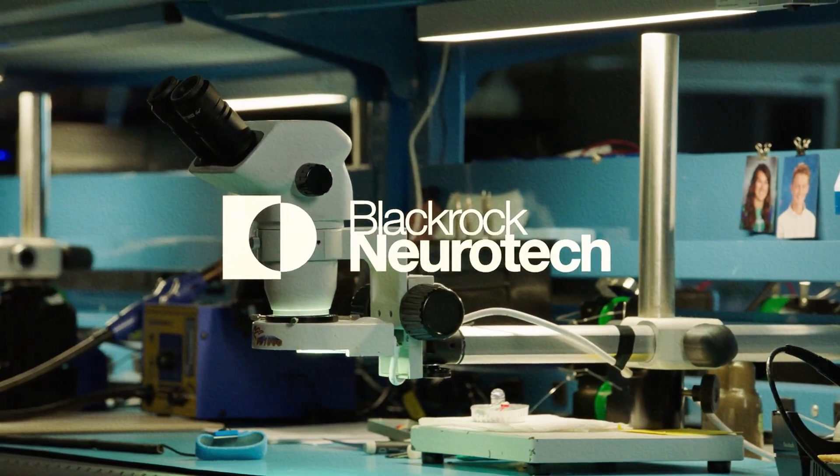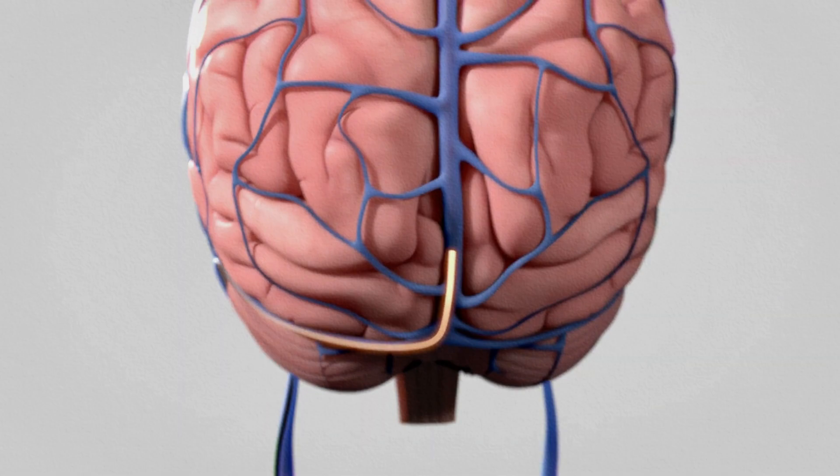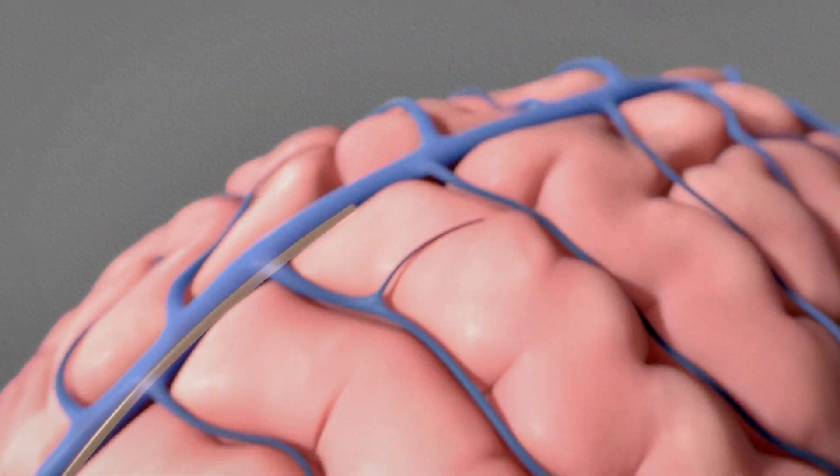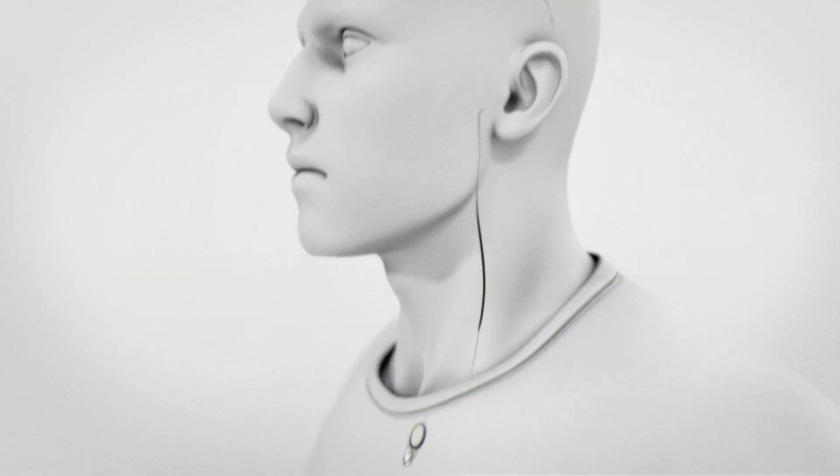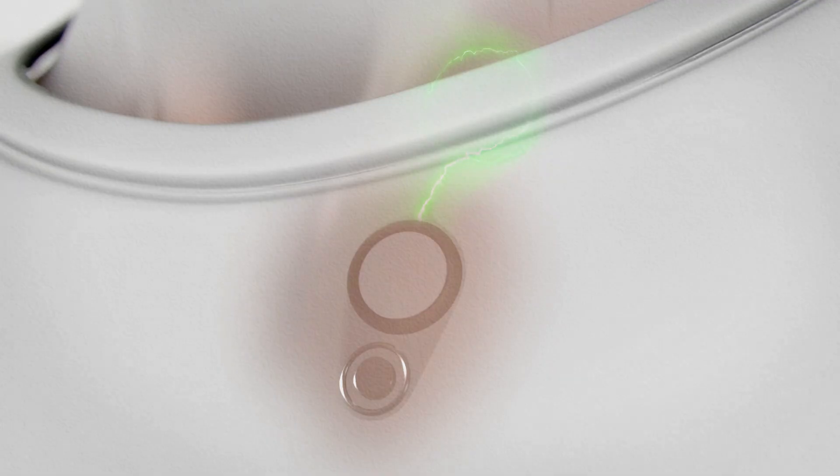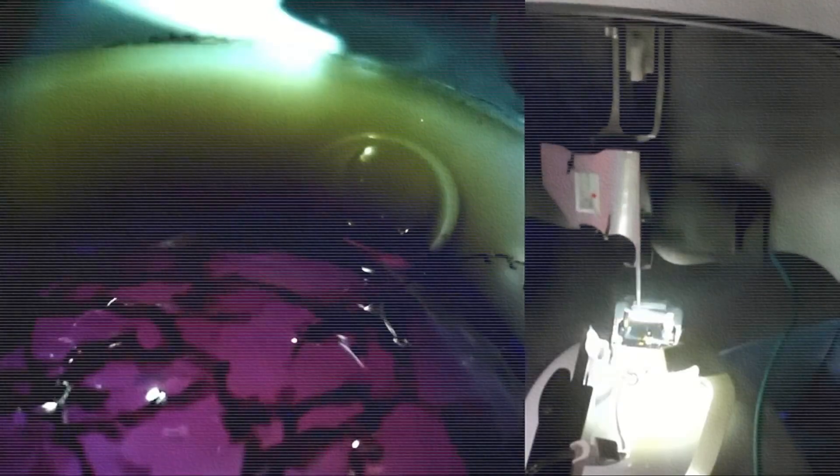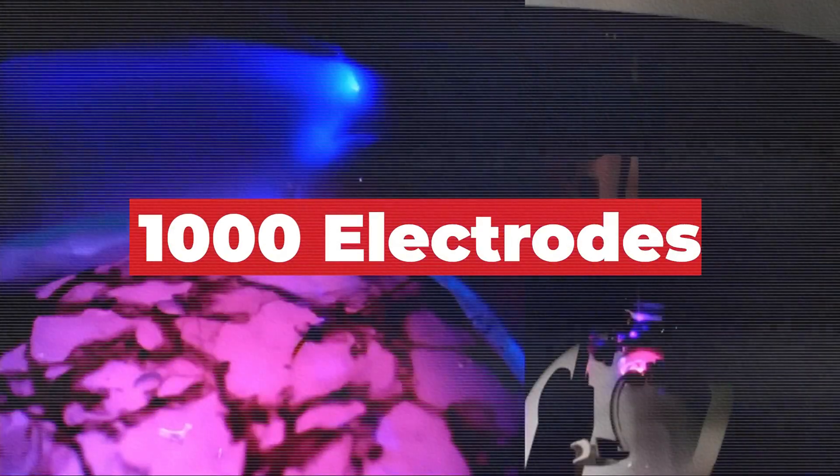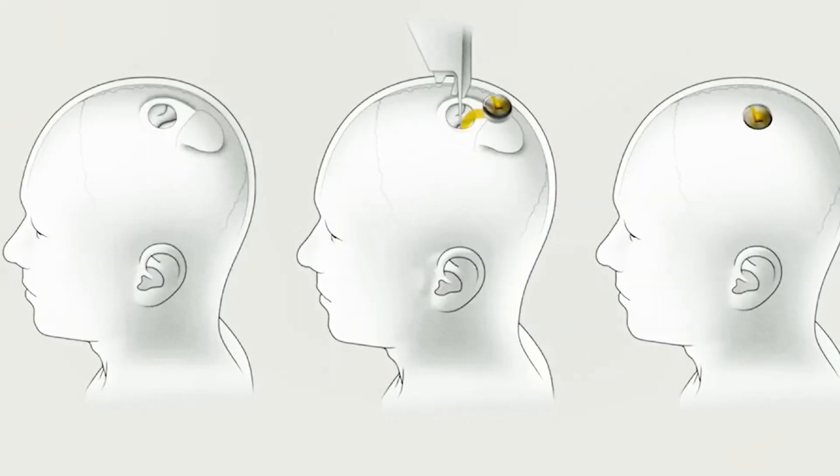Competitors like Synchron and BlackRock Neurotech are chasing similar goals with less invasive techniques, but they're limited by design. A stent in a blood vessel will never give you high-res, full-color digital vision. It's like trying to stream Netflix on dial-up. Neuralink's edge? Bandwidth. Thousands of flexible electrodes sewn directly into your brain. It's invasive, yes, but it's the only way to push data in and out with any real speed or resolution. You're basically installing a neural HDMI port.